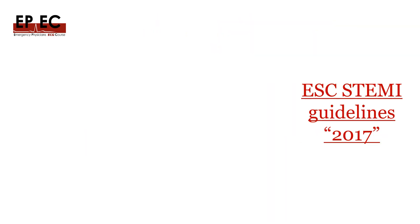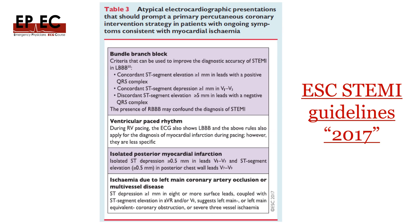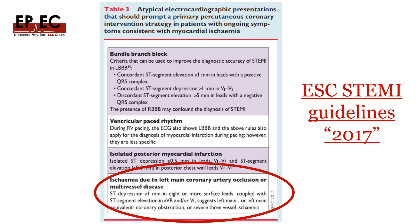The ESC 2017 guidelines also address this: ischemia due to left main coronary occlusion or multivessel disease is described when ST depression is seen in 8 or more surface leads coupled with ST elevation in AVR and/or V1. So, ST elevation in AVR alone — in the presence of chest pain and depression in most other leads — indicates left main occlusion or proximal LAD occlusion.